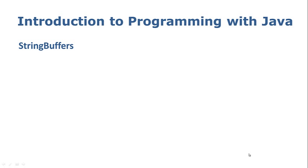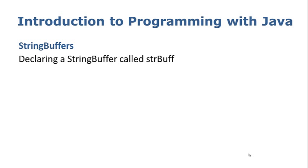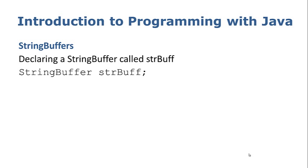So let's take a look at string buffers first. If we wanted to declare a string buffer called strbuff, we use the code StringBuffer strbuff. strbuff is just the abbreviation I'm using for the name of my object — you can choose to name it whatever you want. StringBuffer is the name of the class; strbuff is the name of our object. We declare it just like we would any other object. What that does is it creates an empty string buffer, which for all intents and purposes looks and acts like a string. The only difference is that we can change the contents of a string buffer.